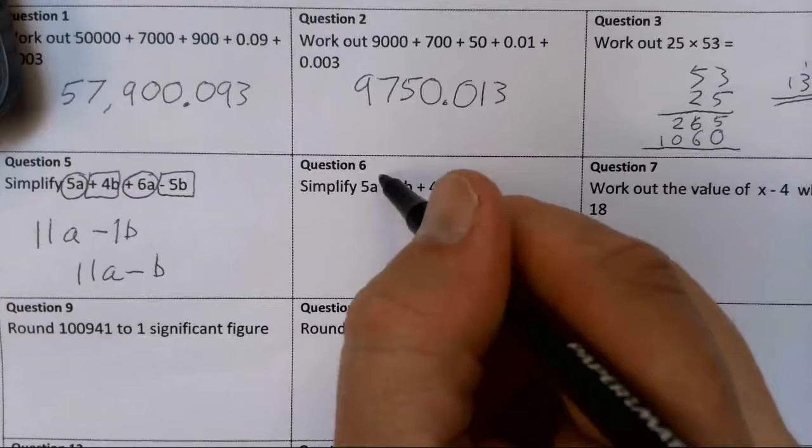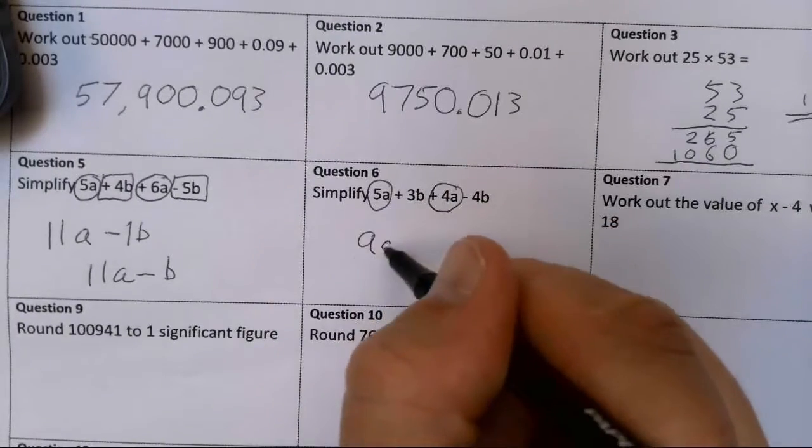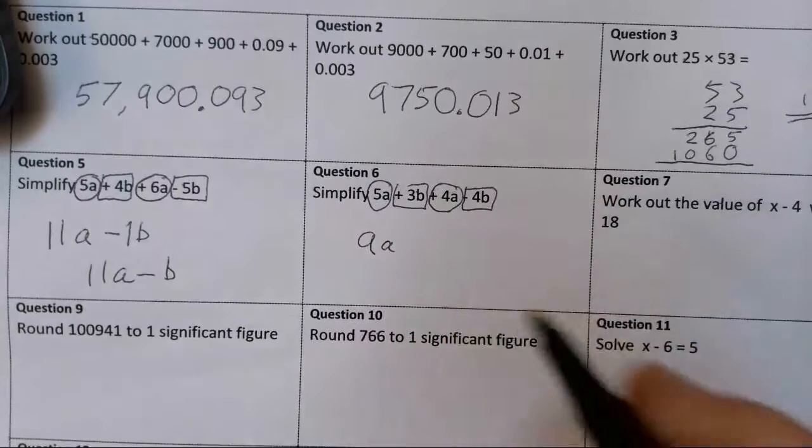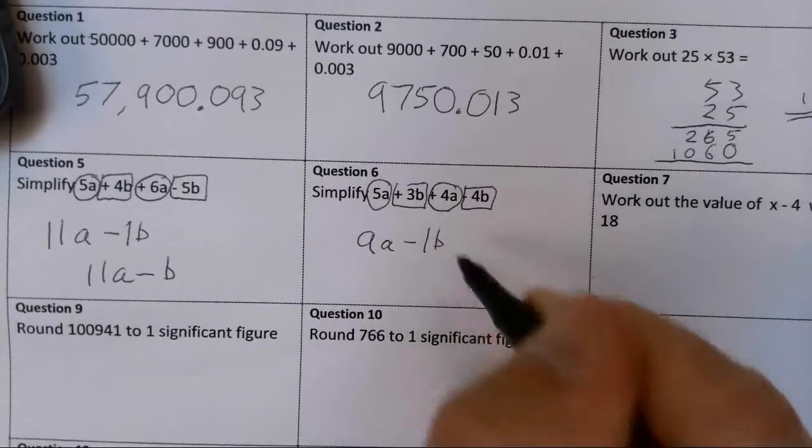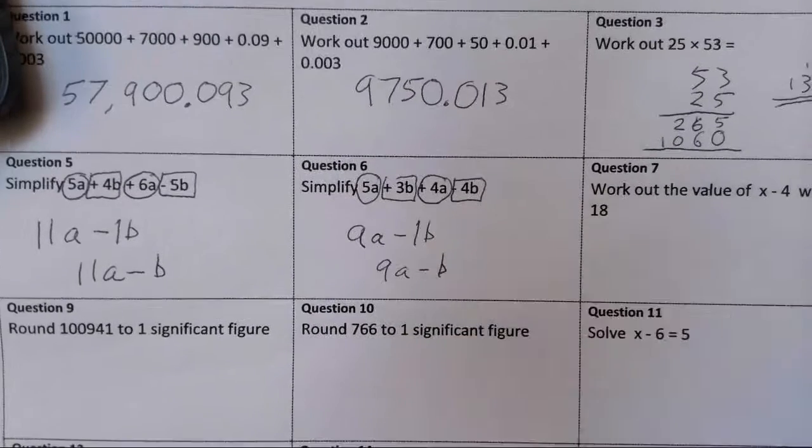5A and another 4A is going to give me 9A. 3B and take away 4B is going to be minus 1B, but we don't need that 1 there, so 9A take away B for this one.